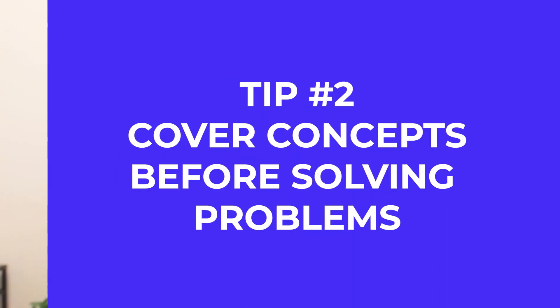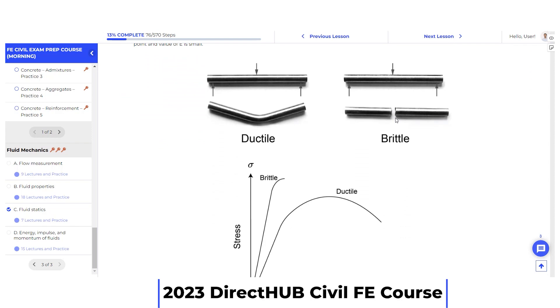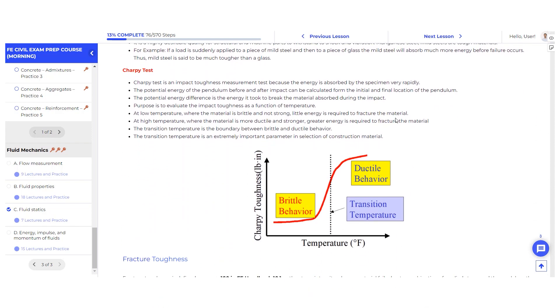Tip number two: cover fundamental concepts, definitions, and theory before solving problems. Don't just solve problems without covering fundamental concepts, theory, and definitions first. You can do this through lesson material — reading slides, conceptual notes, or watching lecture videos that cover these fundamental concepts. Build your own flashcards for definitions and concepts. The FE exam loves to test concepts nowadays, and this also ensures that you have a fundamental understanding of the equations you're going to apply, reinforcing your overall understanding.